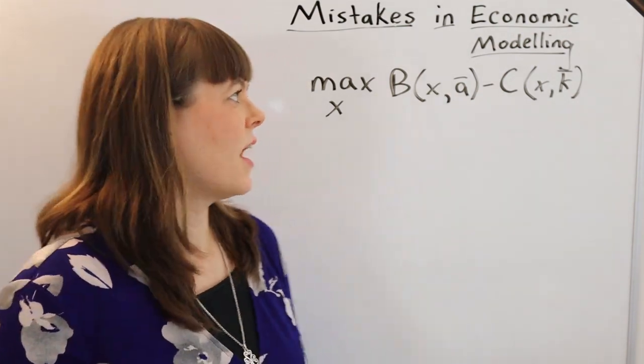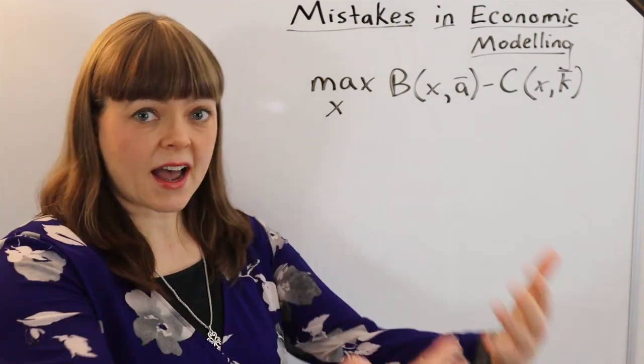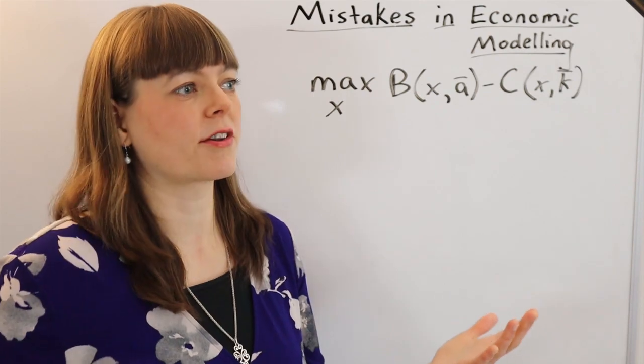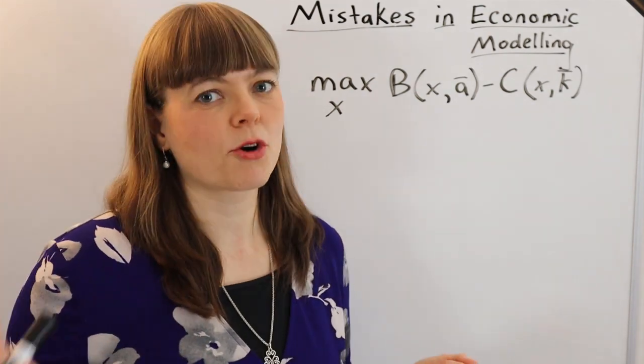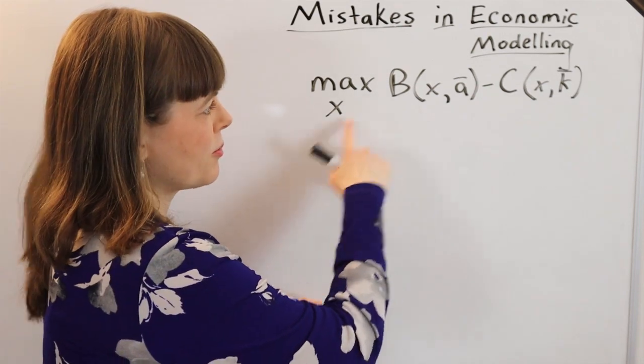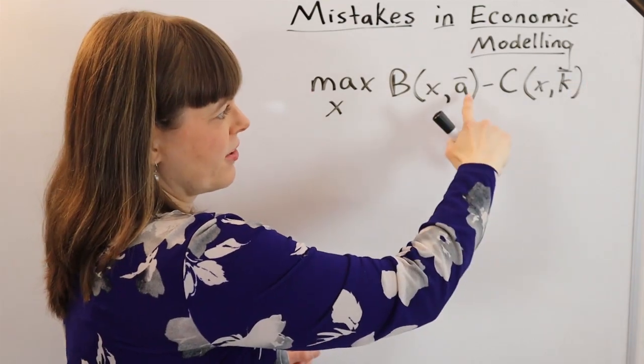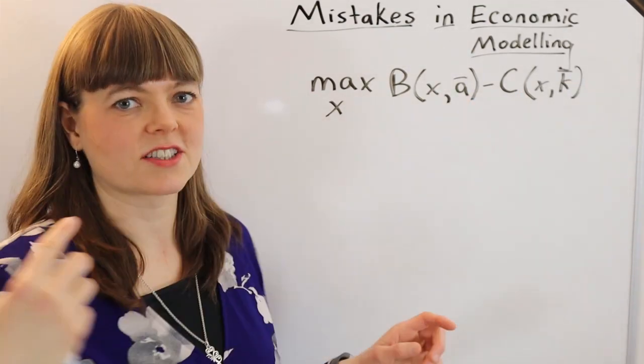But I think that's the best way to learn microeconomic modeling. In which case, after you've built a potential model, you need to check it for mistakes. So here I have a model, we've got a choice variable, benefit and cost, the choice variable is in both of the benefit and cost functions, and we've got a couple of exogenous variables. So what are the most common mistakes?